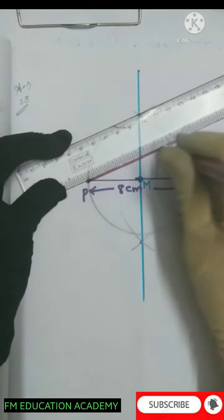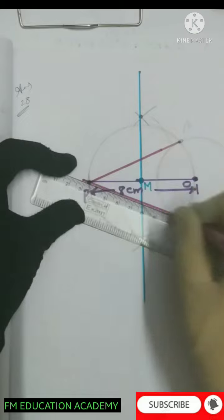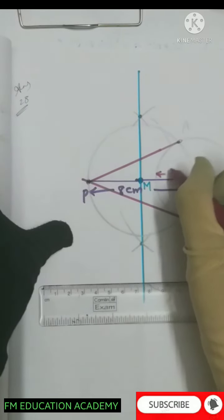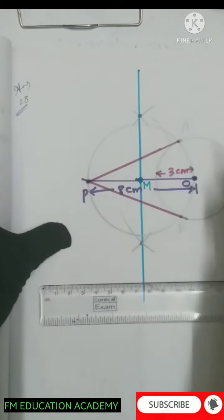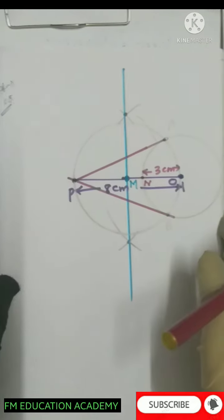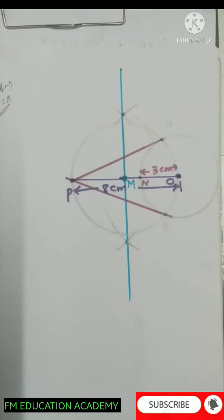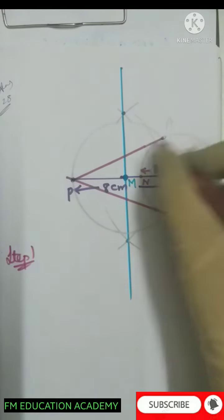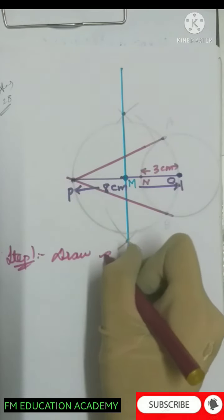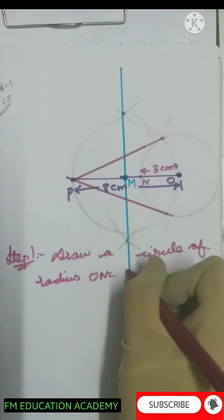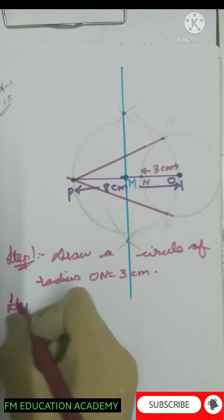Join AP and join PB. This radius OM was 3 centimeters — let this point be N. We have successfully drawn a pair of tangents to the circle. Since this is an 8-mark question, it is essential to write the steps of construction, otherwise marks will be deducted. Step 1: draw a circle of radius 3 centimeters, where ON equals 3 centimeters.